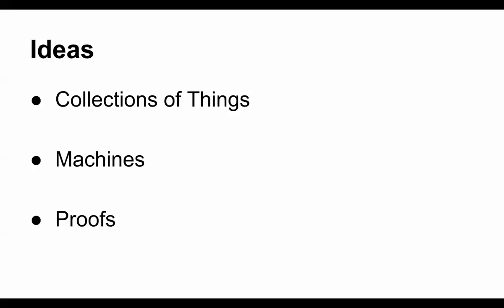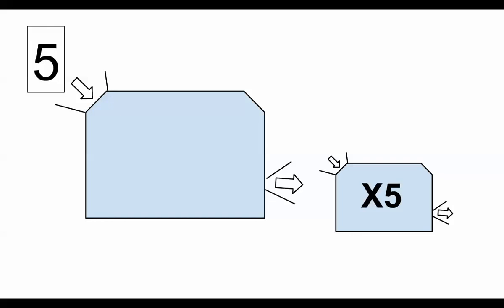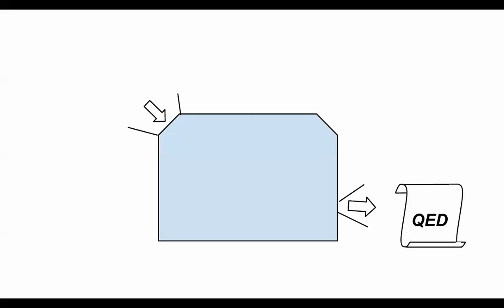So what does type theory do? Type theory takes these three separate ideas and blends them together — it gives a lot of overlap, sometimes not complete overlap. You can have machines that produce other machines, which for someone who does functional programming will be very obvious. You can have machines that eat machines. You can also have machines that make proofs.